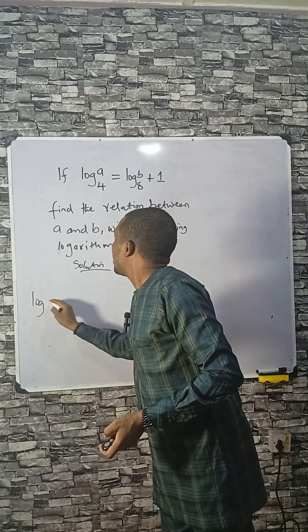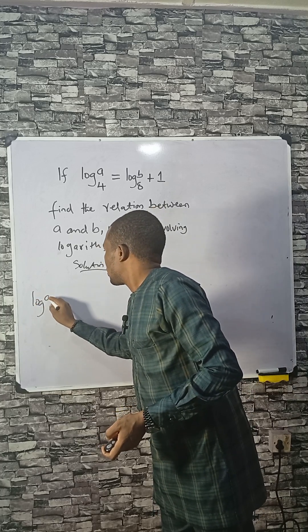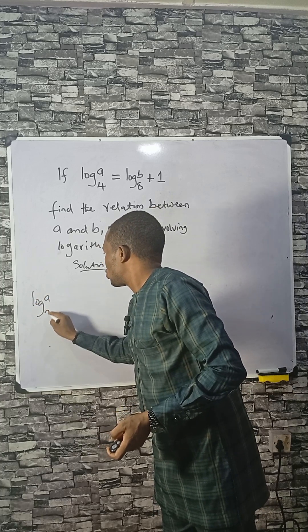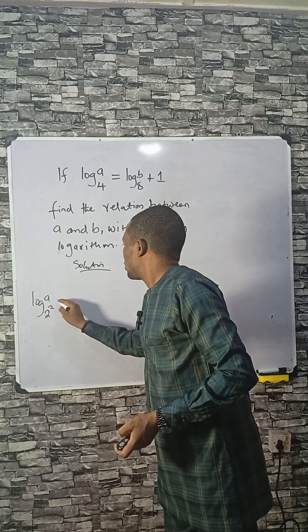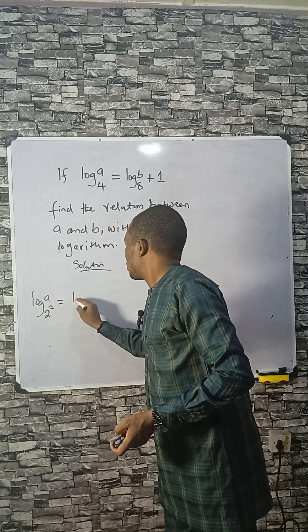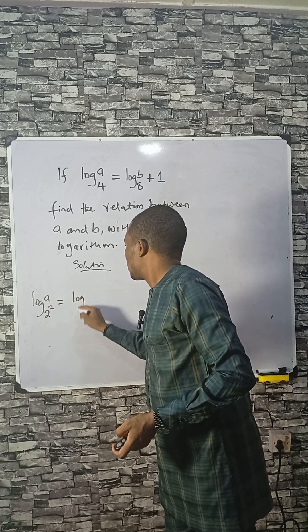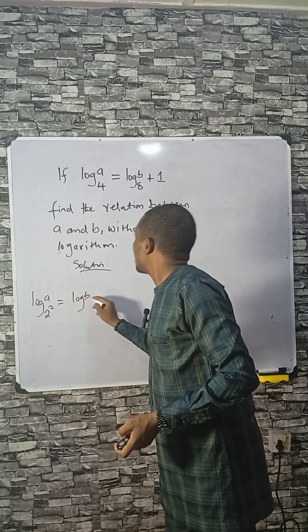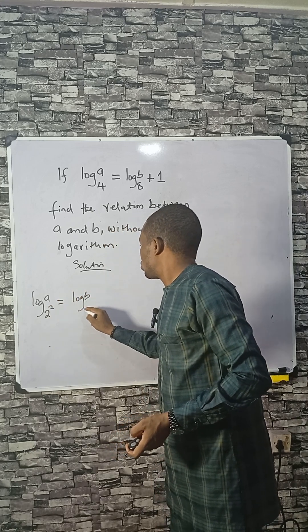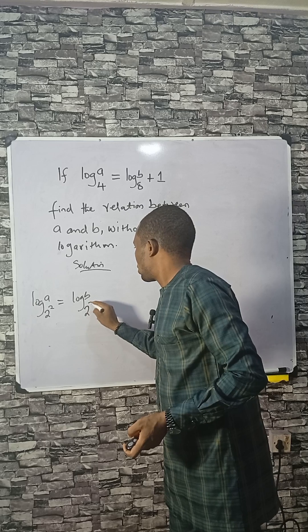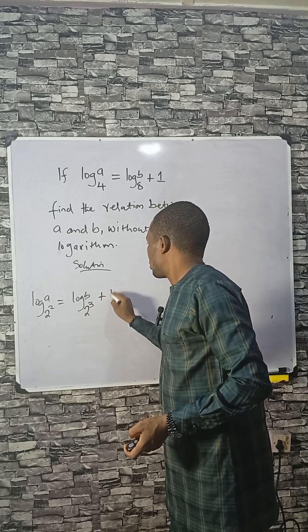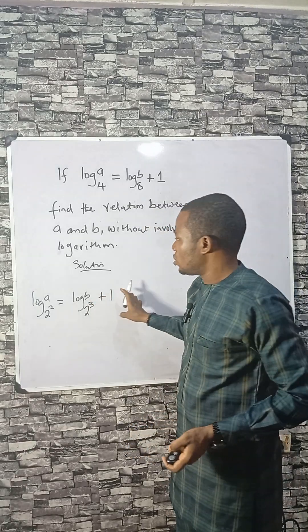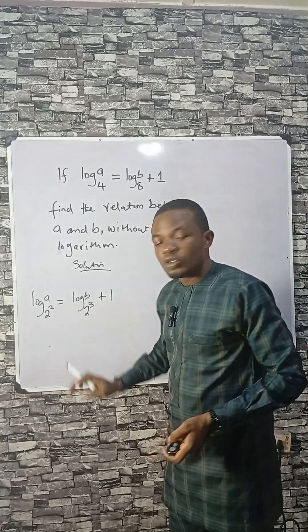Log A base 4 — note 4 is 2 squared. Log B base 8 — note 8 is 2 cubed. Plus 1, which you can write as log 2 base 2, since that equals 1.